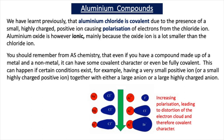This graphic shows that with Al3+, a small highly-charged positive ion, increasing the size of the halide ion leads to covalent bonding. Aluminium fluoride is ionic due to the small size of the fluoride ion, but as we increase the size of the anion, polarisation increases and we end up with covalent bonding. So aluminium chloride is covalent and aluminium bromide is covalent.